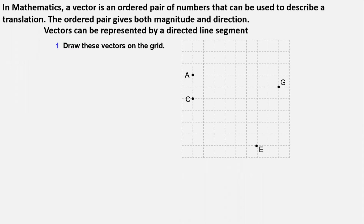So draw these vectors on a grid. Drawing vector AB (5, 2), where 5 is your x direction and 2 is your y direction. Remember, the x axis is your horizontal axis and y axis is the vertical axis. If it is positive x, we go right; if it is positive y, we go up; and if it is negative, we go down.